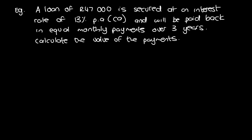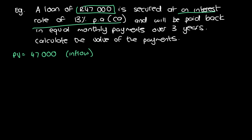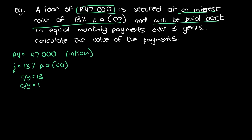Let's jump right in by writing down what we know. The loan is 47,000, so PV = 47,000. That's an inflow of money to us because the loan money is given to us to use. The interest rate is 13% per annum compounded annually, so the nominal interest rate is 13%. We put the nominal interest rate into the financial calculator, so IY = 13. From this, we can also determine that CY (compounding periods) = 1, because it's compounded annually.